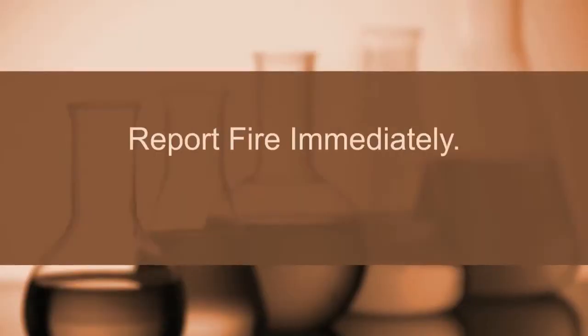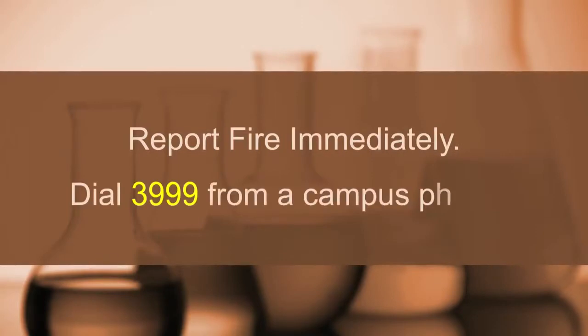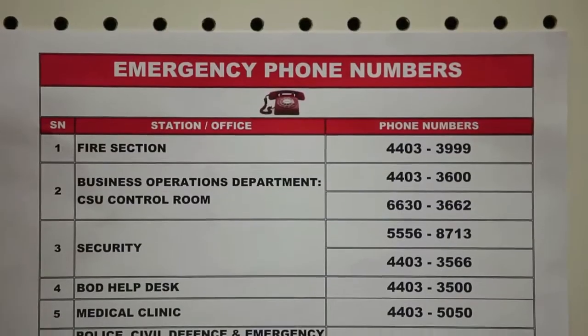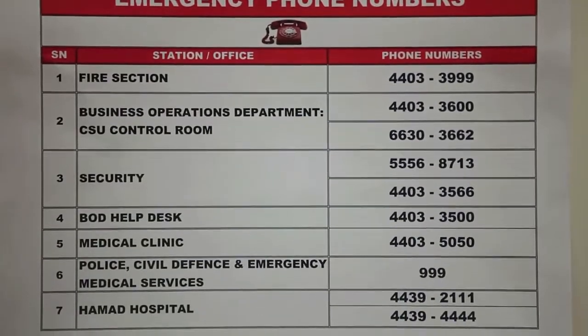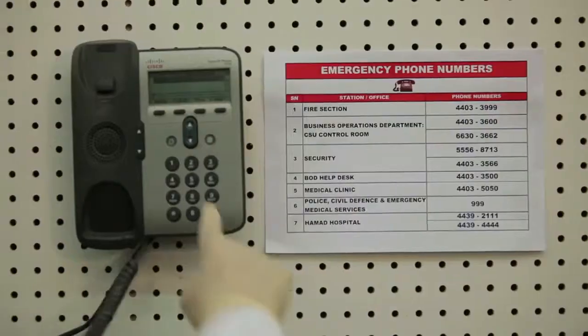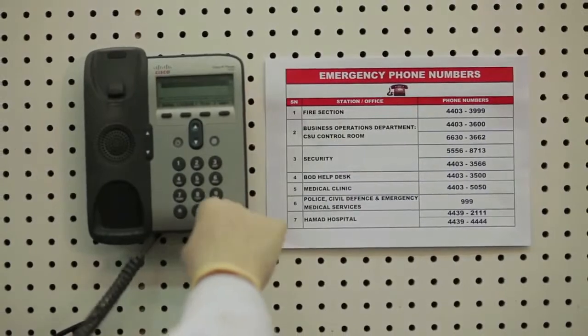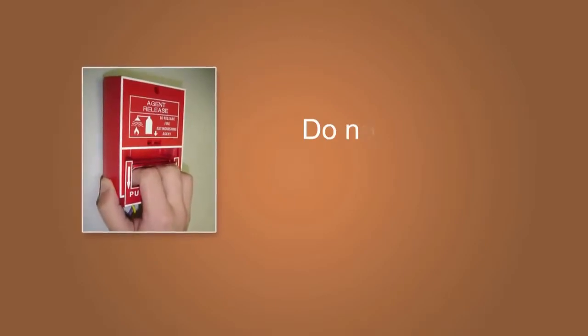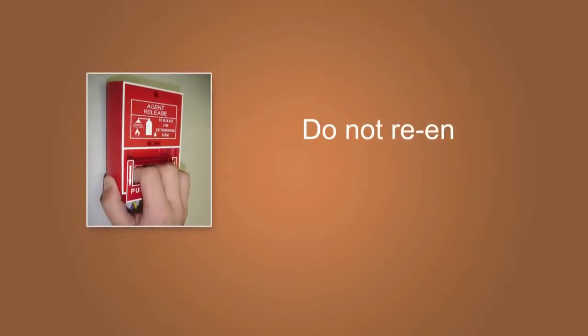When a fire is discovered, regardless of its size, report it immediately from any campus phone. Be prepared to tell the operator vital information, such as what is on fire, where the fire is located, if there are any injuries, and if you are going to use a fire extinguisher. Do not hang up until the operator tells you to do so. If evacuation is necessary, pull the fire alarm and proceed to the nearest exit. Do not re-enter the building until authorised by the fire department.